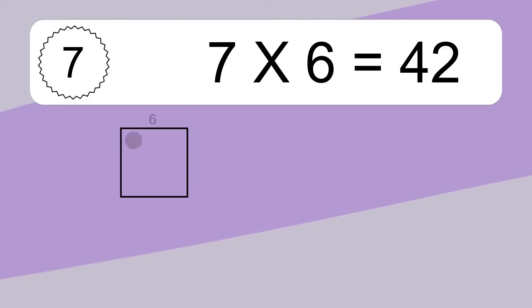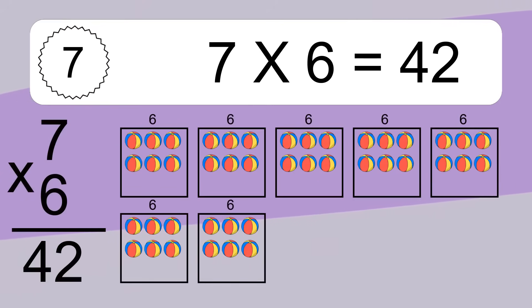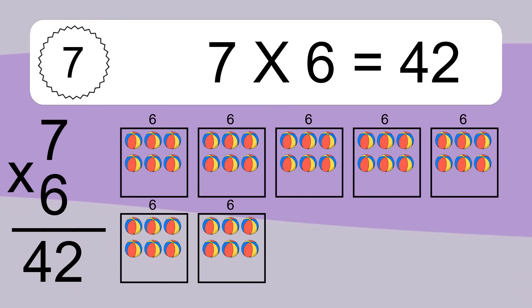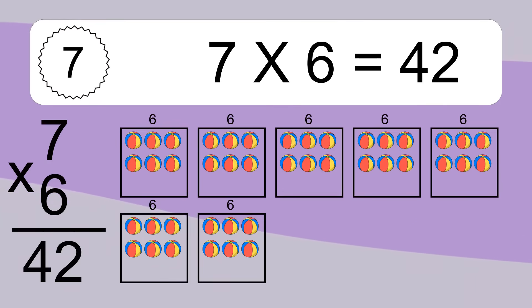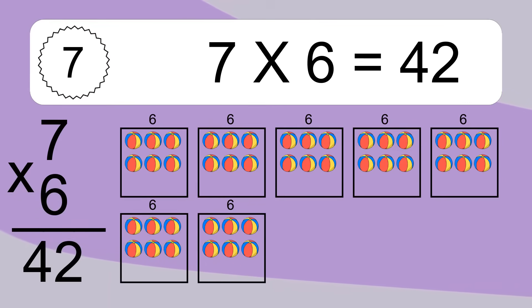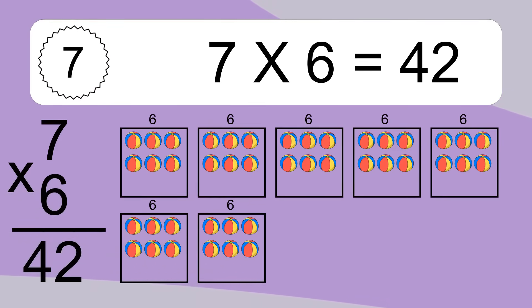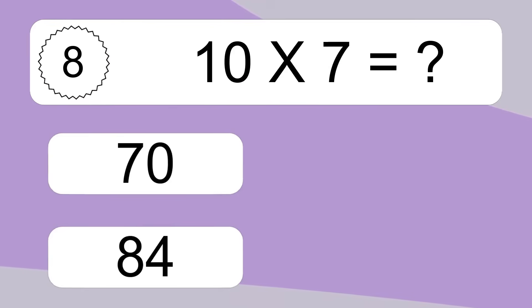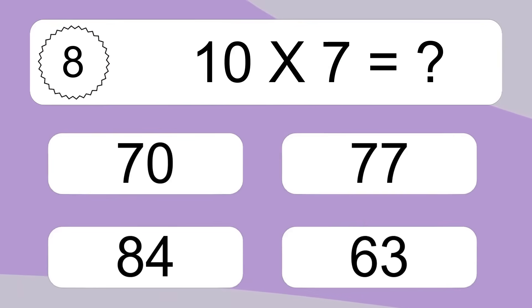7 times 6 equals 42. We have 7 boxes and each box has 6 colorful balls inside. If you count all the balls in all the boxes together, you will have 7 times 6 balls. This equals 42 balls. 10 times 7 equals what?